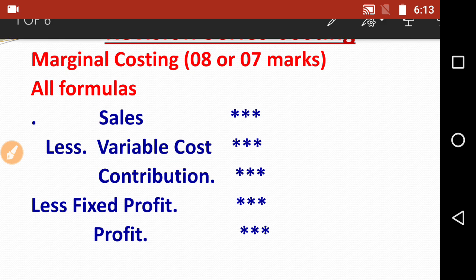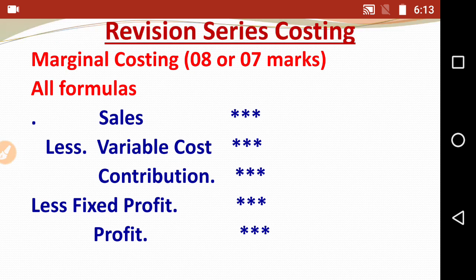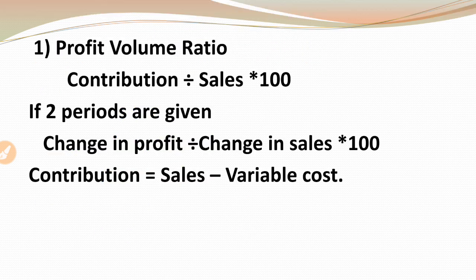This is also important from your exam point of view, because sometimes questions give profit and fixed cost, and students get confused about how to calculate contribution — because they mostly solve it only as Sales minus Variable Cost equals Contribution. That is the main reason we have to concentrate on this as well. Now let's revise formulas one by one.